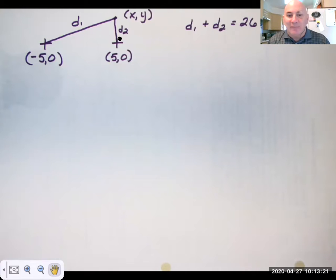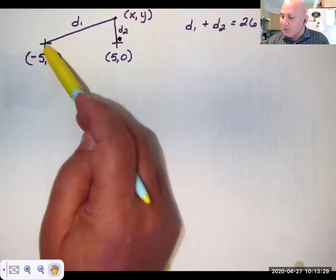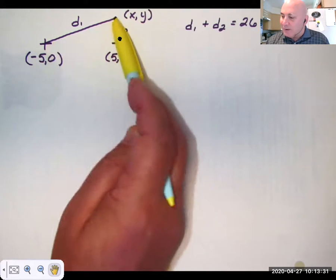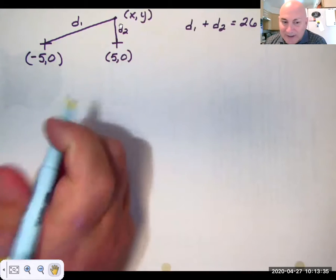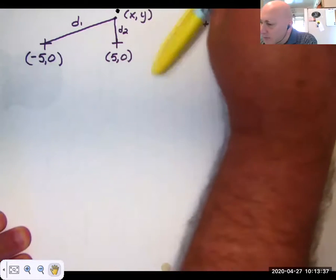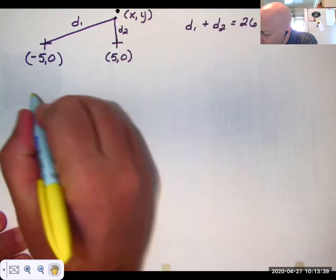But we didn't derive it from the definition. The definition says that from two fixed points, the sum of the focal radii is a constant. So all we get is this from the definition.